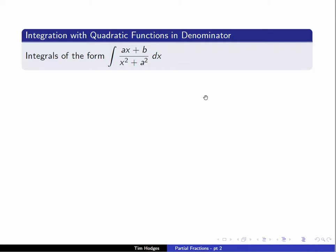In our last video, we looked at the problem of finding the integral of a rational function where the denominator was a product of linear factors. We now move on to look at the general case. In particular, we look at the situation where the denominator contains a factor that's an irreducible quadratic. The simplest kind of irreducible quadratics are ones of the form x squared plus a squared, so let's begin by looking at this simple case.